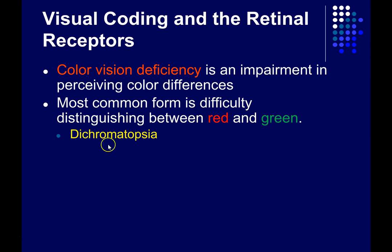The most common form of color vision deficiency is difficulty distinguishing between reds and greens, between the medium and long wavelengths of light. The most common reason for this is something called dichromatopsia. Most humans are trichromats, meaning that we have three cone types, and therefore three types of photopigments.